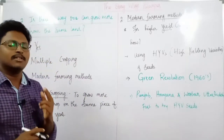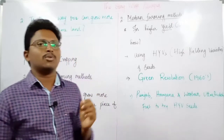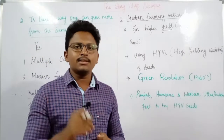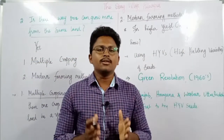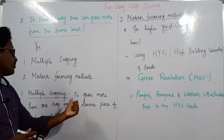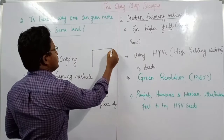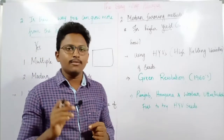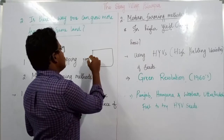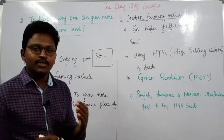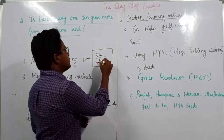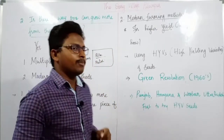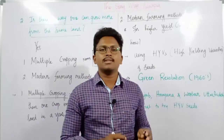There are mainly two ways in which village Palampur is following to increase production. One is multiple cropping, and the second is modern farming methods. First, let us discuss multiple cropping. Multiple cropping means growing more than one crop on the same piece of land in a year. For example, in a single year if we grow more than one crop on the same piece of land, we call it multiple cropping.